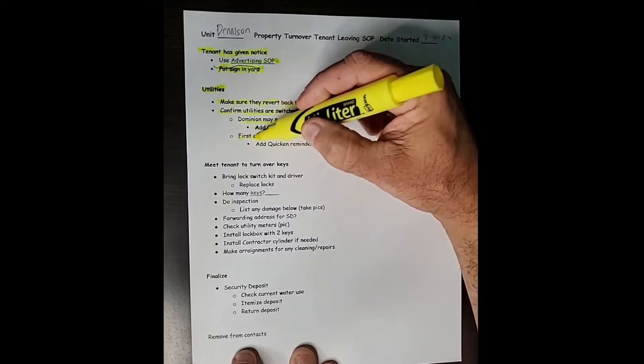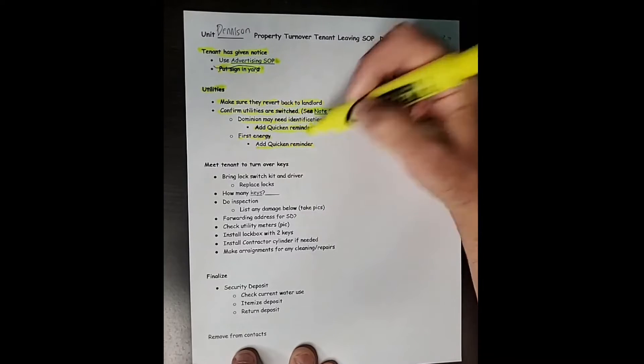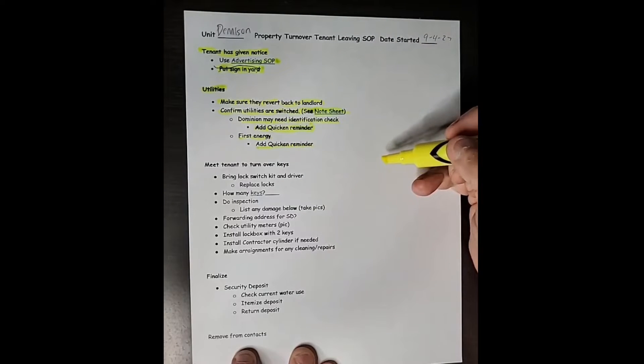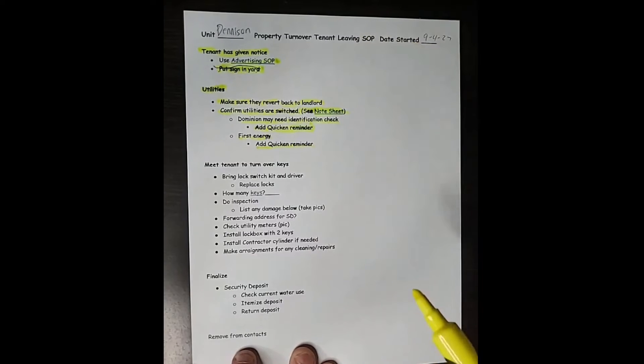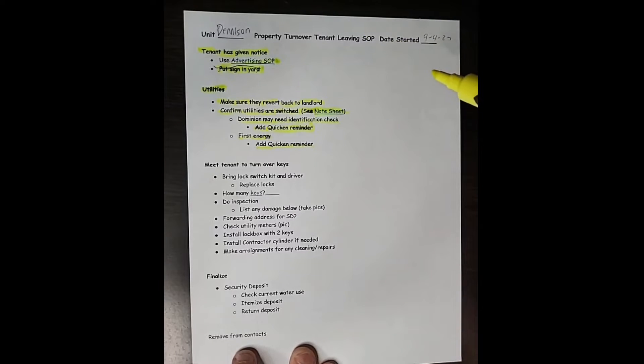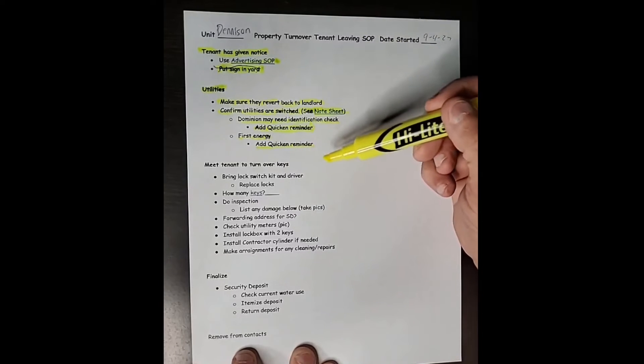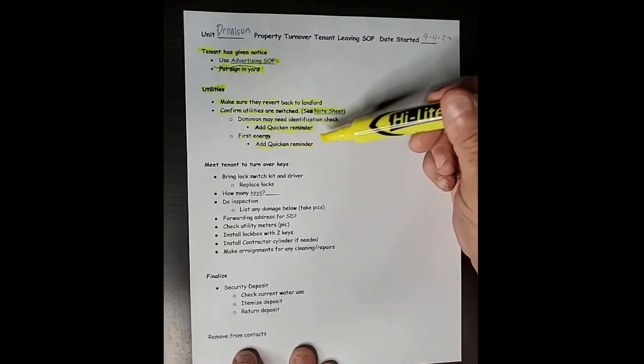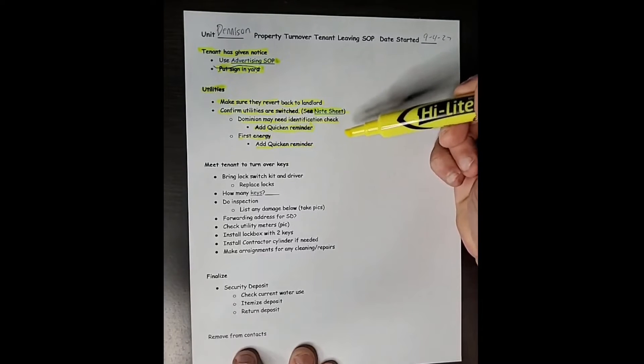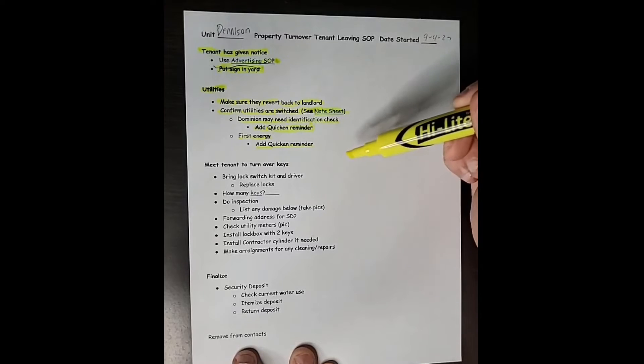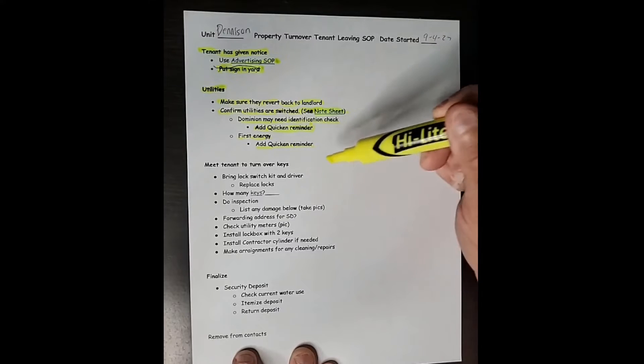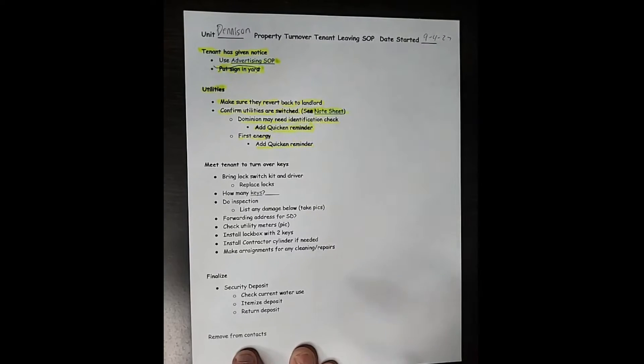Same thing with First Energy. I add the Quicken note to pay that bill. Now, when a tenant moves in on the other SOP, if I do one of those in the future, I will do this in reverse. Make sure that the tenant has switched these utilities back into their name and then make sure that they get removed from my Quicken software.